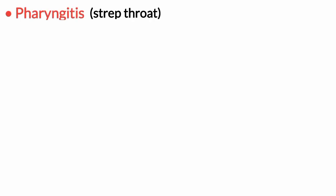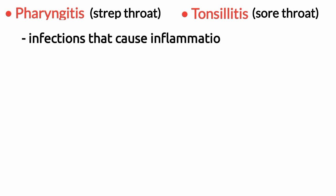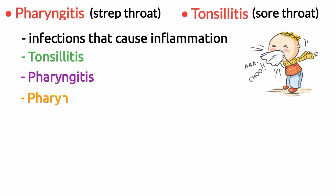Pharyngitis or strep throat and tonsillitis or sore throat are infections that cause inflammation. If the tonsils are affected, it is called tonsillitis. If the throat is affected, it is called pharyngitis. If you have both, it is called pharyngotonsillitis.